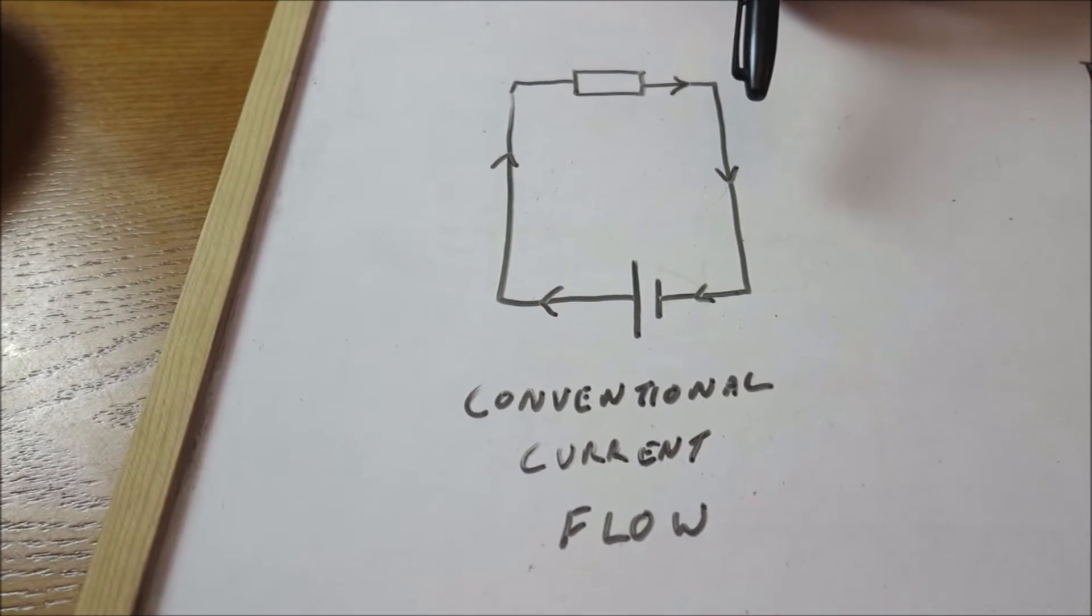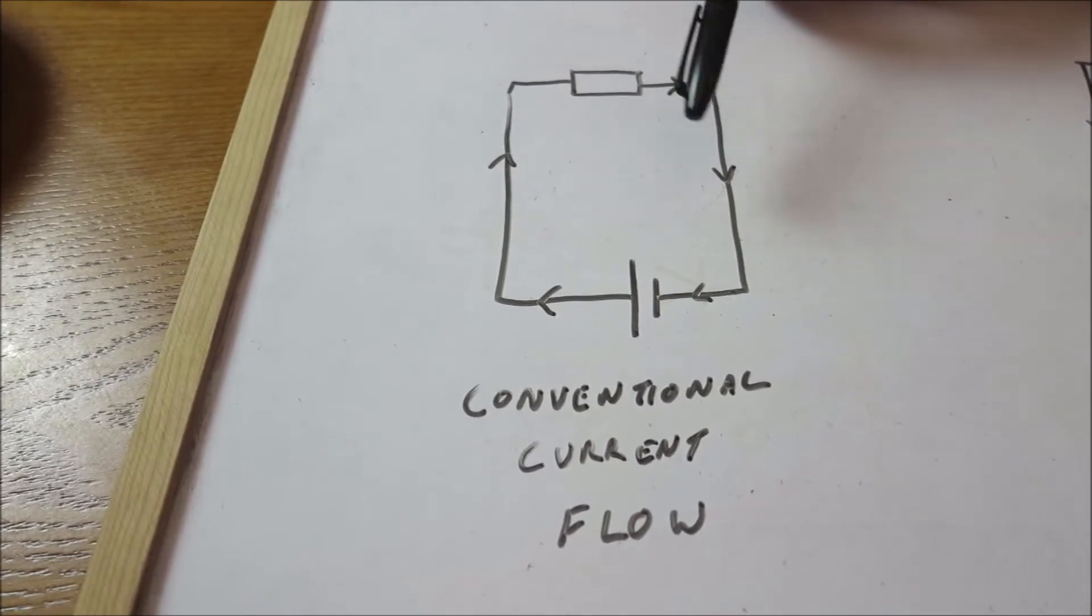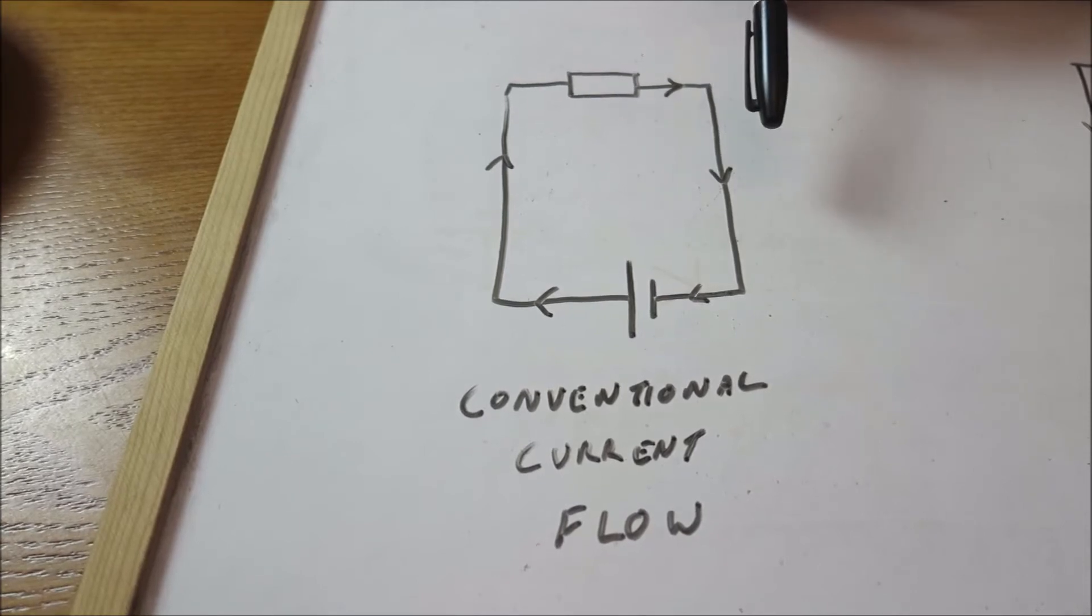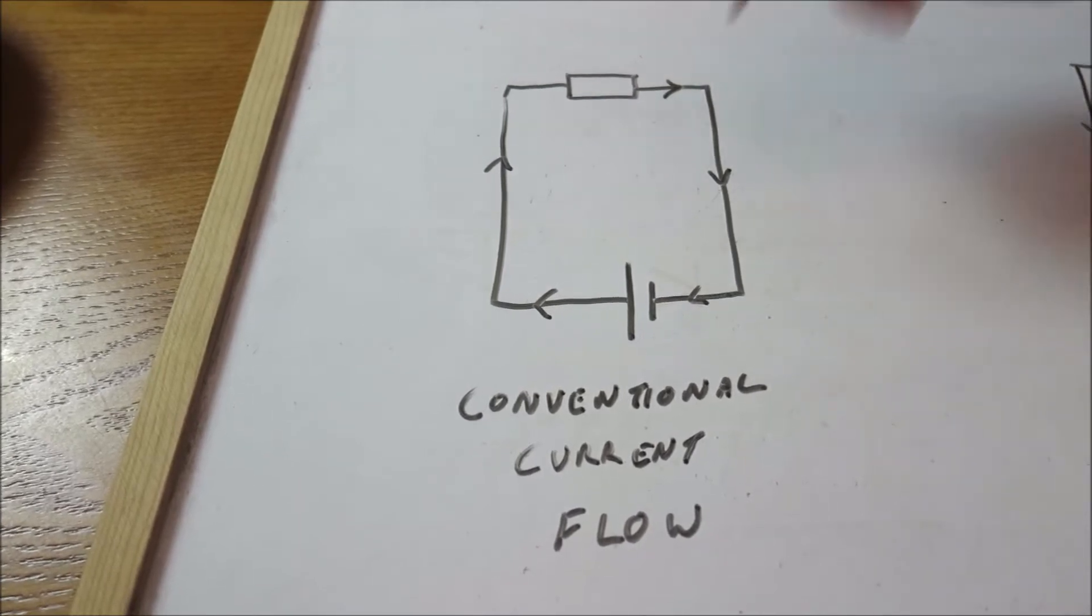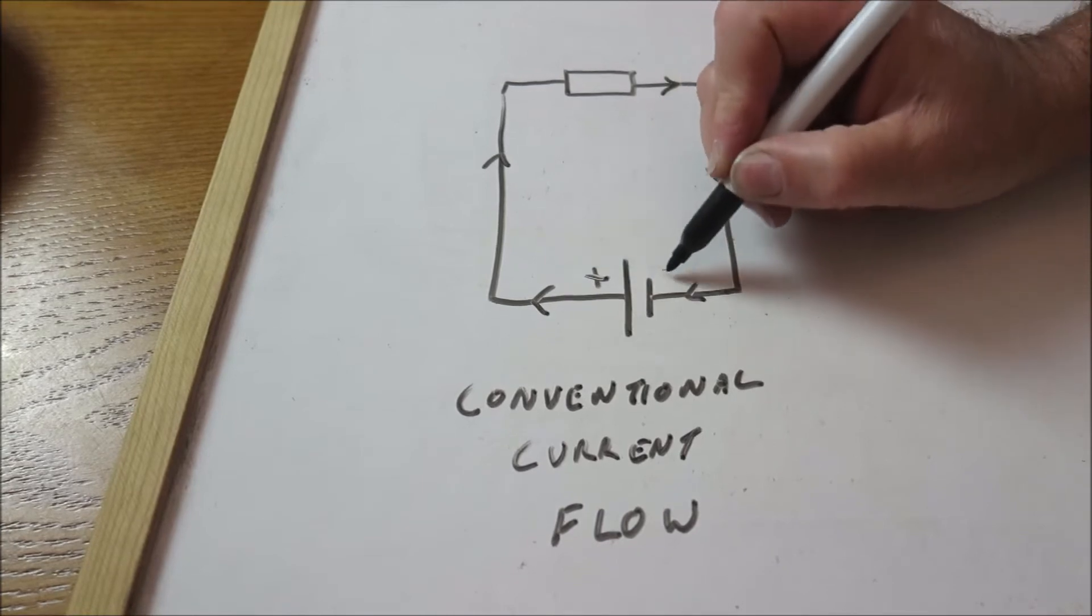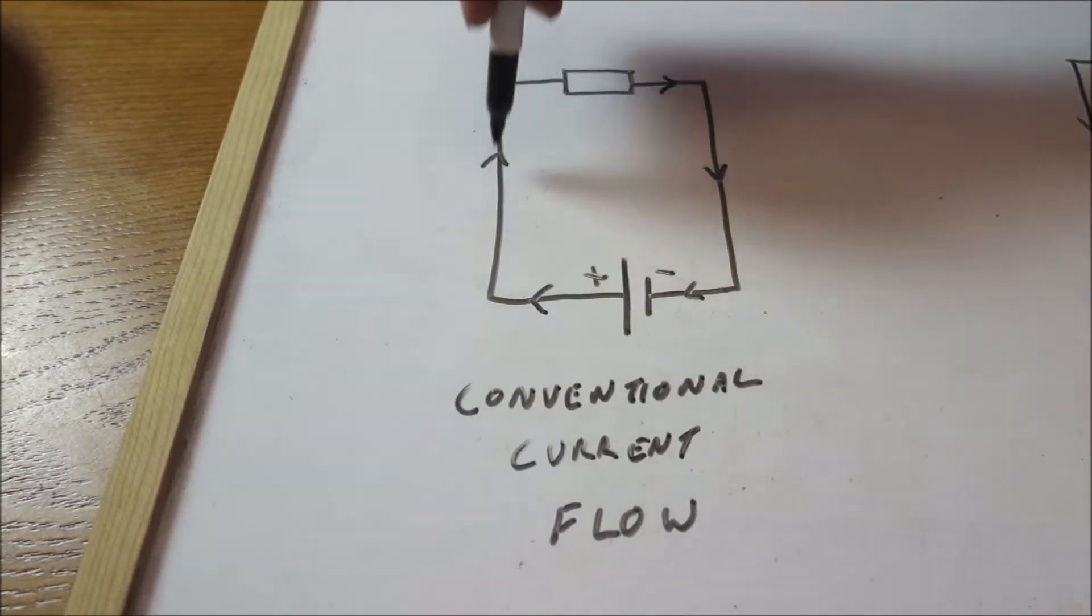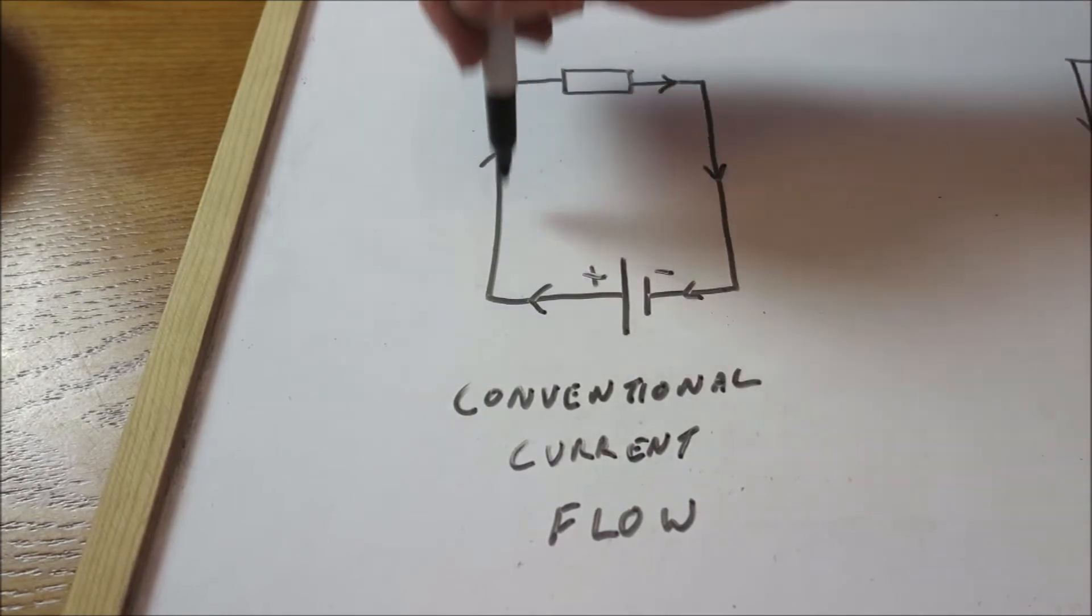So if we have a look at conventional current flow, historically people thought that electricity flowed from positive through to negative and that's called conventional current flow. So that's what we thought happened.